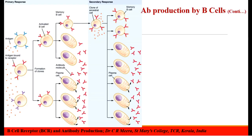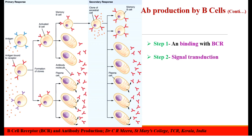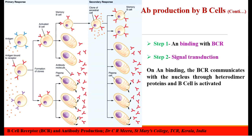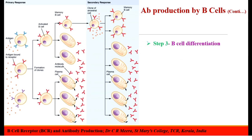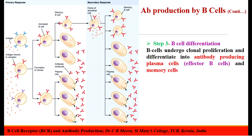Coming to the steps in detail. The first step is binding of the antigen with specific B-cell receptors on the cell membrane of the B-lymphocytes. The second step is signal transduction and activation of B-lymphocytes. When an antigen is captured, the membrane receptor communicates with the nucleus through the signal transduction heterodimer proteins and the B-cells will get activated. The third step is B-cell differentiation. Upon activation, the B-cells immediately undergo clonal proliferation and differentiate into antibody-producing plasma cells, otherwise known as effector B-cells, and the memory cells.